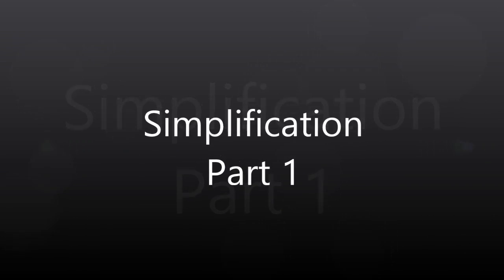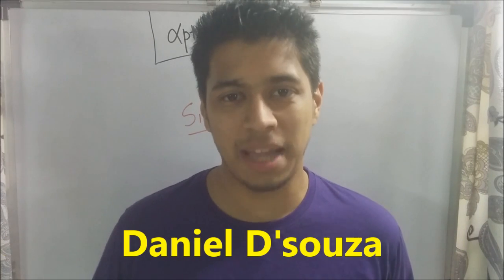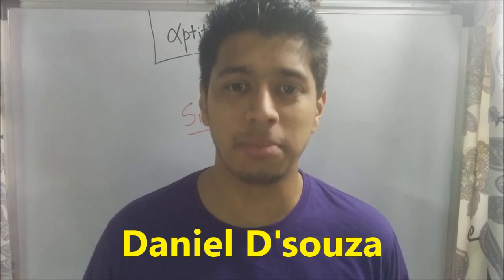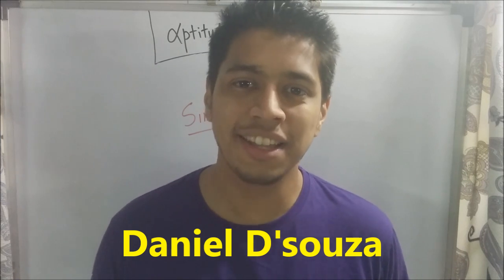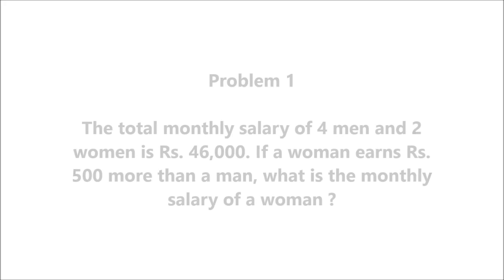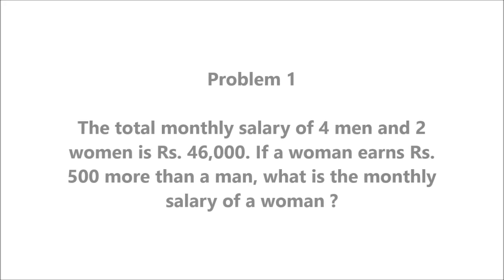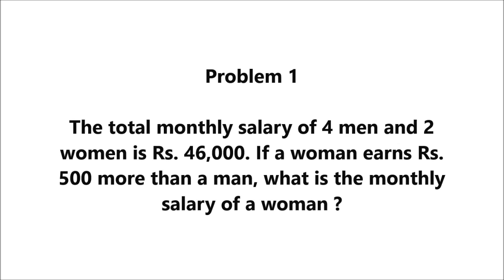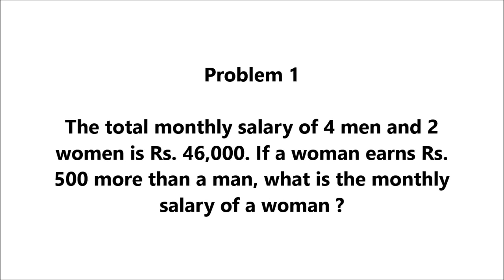Simplification part one. Hi, I'm Daniel Sousa and welcome to AppTutic Academy. This is part one of the lecture on simplification. Here's your first sum — Problem 1: the total monthly salary of four men and two women is rupees 46,000.